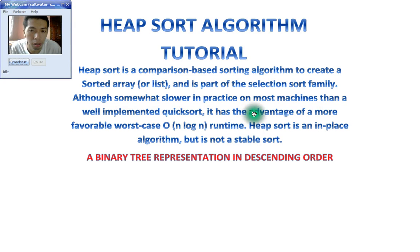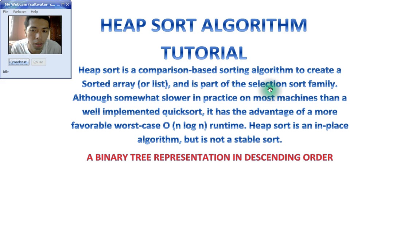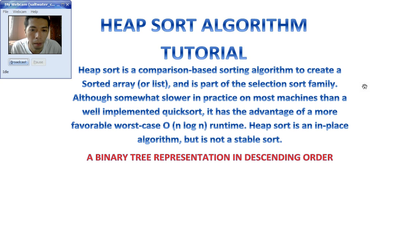This is the Heapsort algorithm tutorial. Heapsort is a comparison-based sorting algorithm used to create a sorted array or list, and is part of the selection sort family. It is a slower algorithm, and mostly the disadvantage is that it's not stable. The advantage is a favorable worst-case O(n log n) runtime.